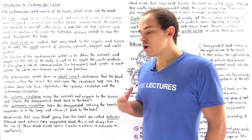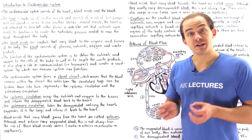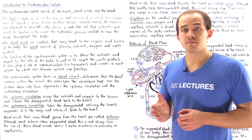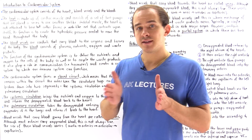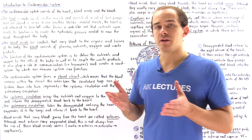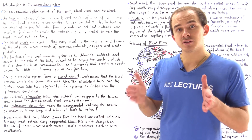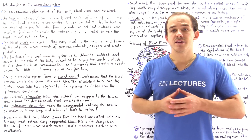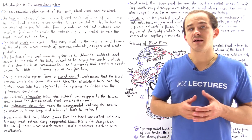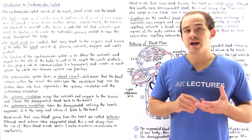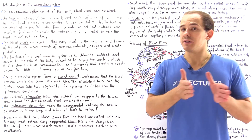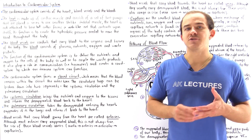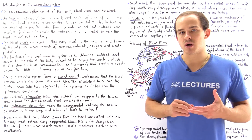The heart is basically a pump. In fact, it consists of two individual pumps that are connected in series with respect to one another, so next to one another. We have a pump on the right side that consists of the right atrium and the right ventricle, and we have a pump on the left side that consists of the left atrium and the left ventricle.